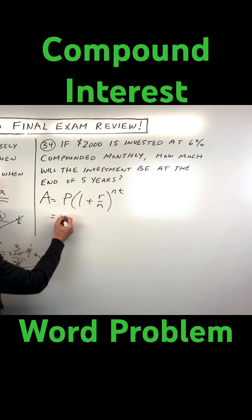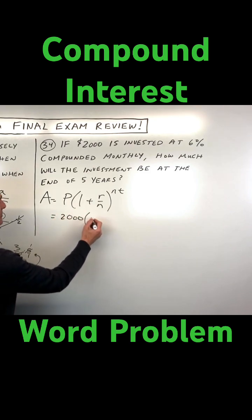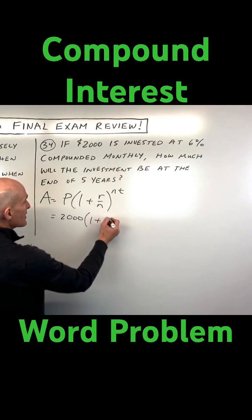You can see P is the principal. That's what we're starting with. That's the $2,000. The interest rate is 6%. We're going to write that as a decimal, 0.06.